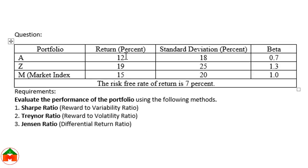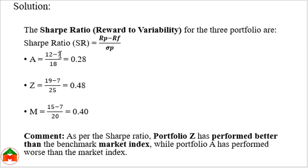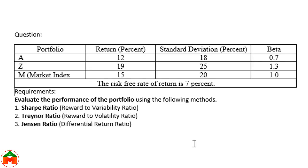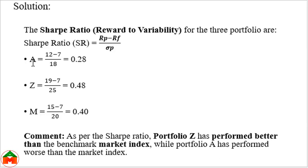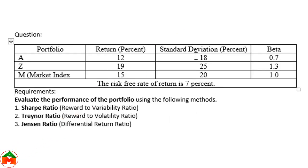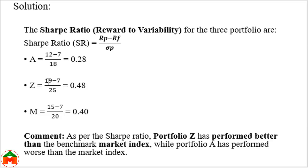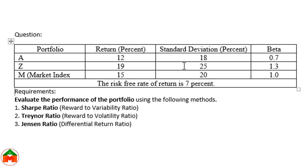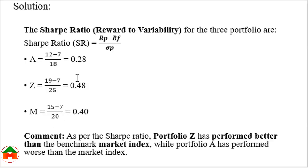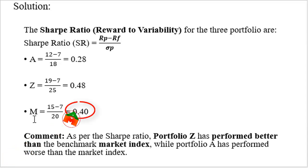Calculating the Sharpe ratio: For Portfolio A: (12 minus 7) divided by 18. For Portfolio Z: (19 minus 7) divided by 25. For the market portfolio: (15 minus 7) divided by 20. The results are: Sharpe ratio for Portfolio A = 0.28, Sharpe ratio for Portfolio Z = 0.48, and Sharpe ratio for the market index = 0.40.